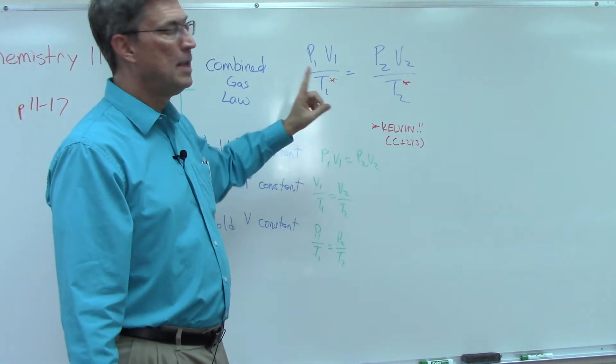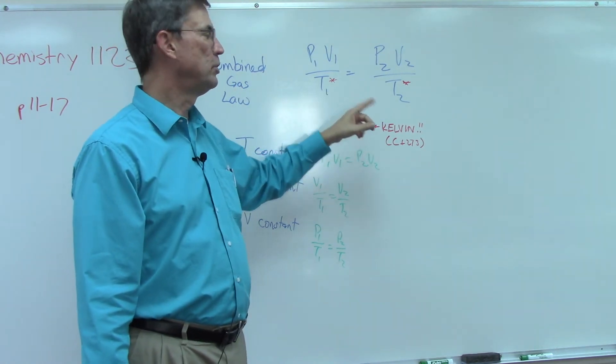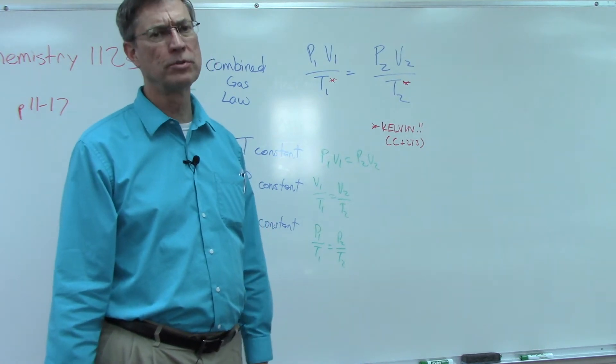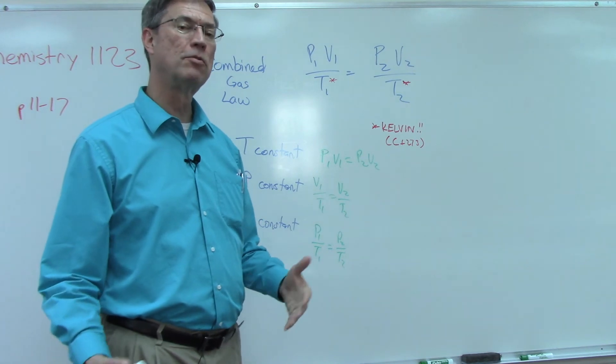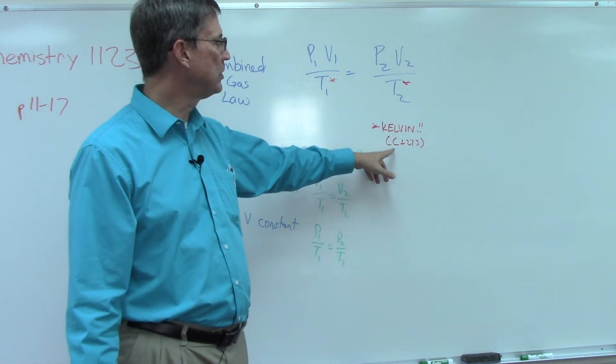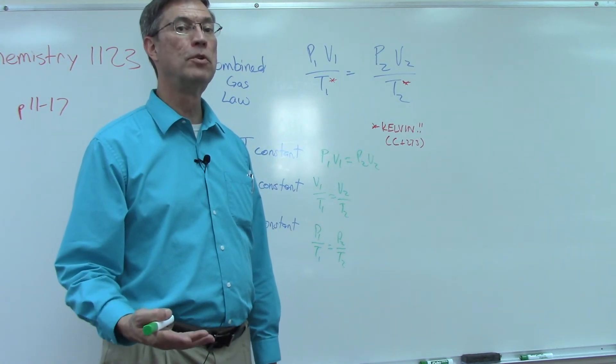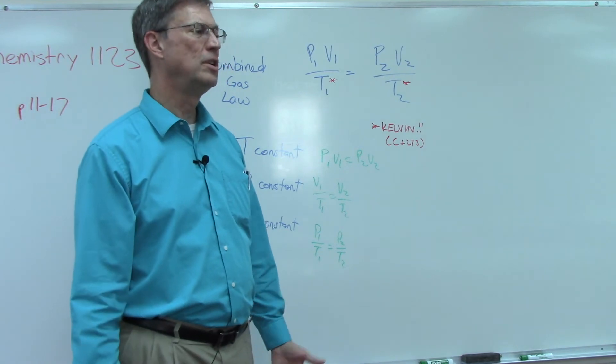An important point: always, always, always in solving these problems we must have temperature in Kelvin. Maybe you remember that from physical science. You have to take Celsius and convert to Kelvin, so if they give you Celsius, we add 273. Sometimes they would even say when you're done, convert the temperature back to Celsius, so then you just subtract 273 and you're at Celsius.